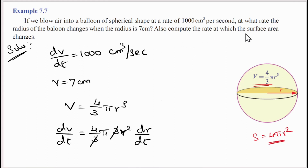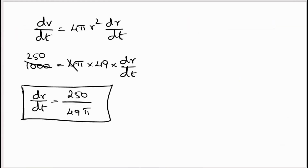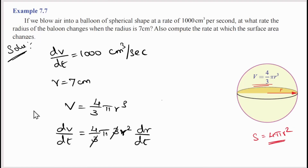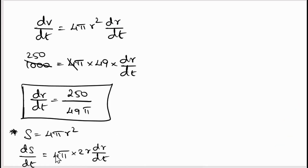Also, compute the rate of change of surface area. The surface area formula is S = 4π r². Differentiating with respect to time: ds/dt = 4π · 2r · dr/dt = 8π r · dr/dt. This is the second part of the solution.